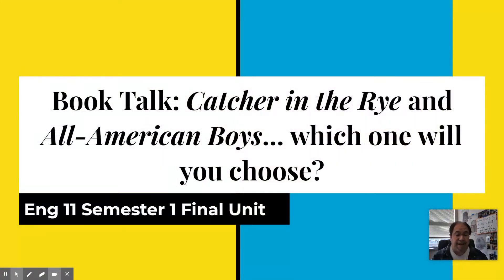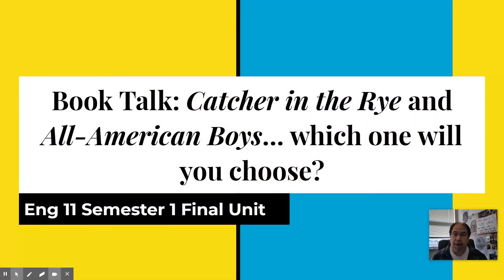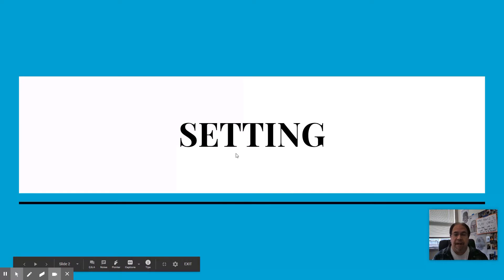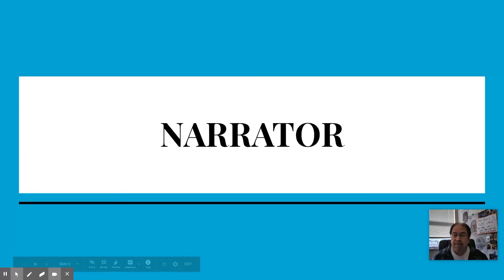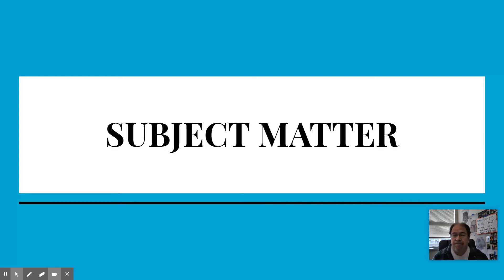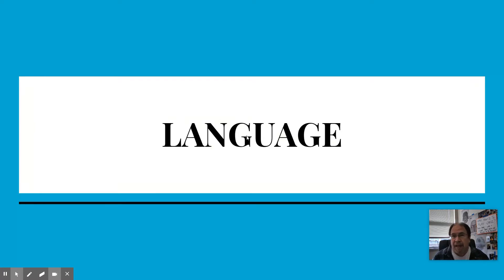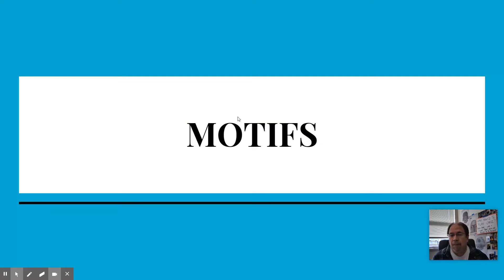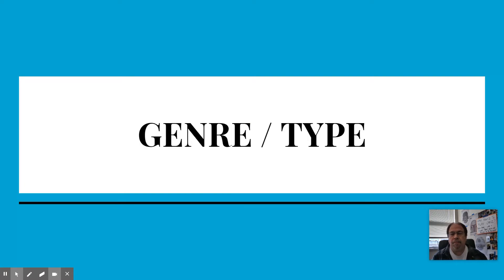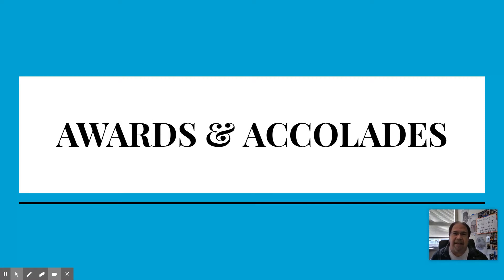Our two books for this unit are J.D. Salinger's Catcher in the Rye and All-American Boys by Jason Reynolds and Brendan Keeley. In this video, I'll be comparing a few different elements of each book, showing you where they're similar and where each title is unique. I will be covering setting in terms of time and place, the narrator — or in one case, narrators — the subject matter, the language in terms of level and style, motifs (a motif is essentially a thing that is repeated more than once and has meaning), the genre or type of story, and some awards and accolades each book has received.